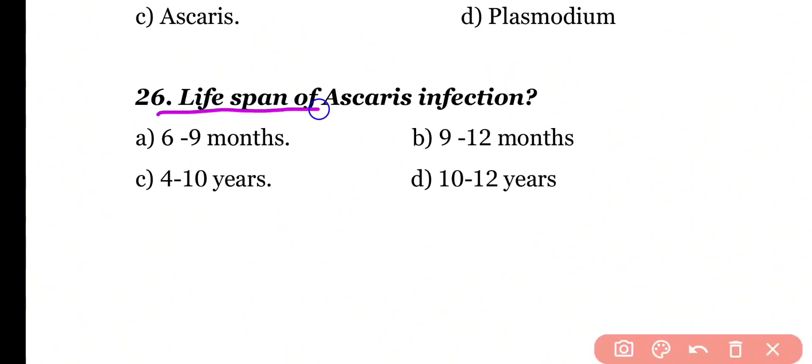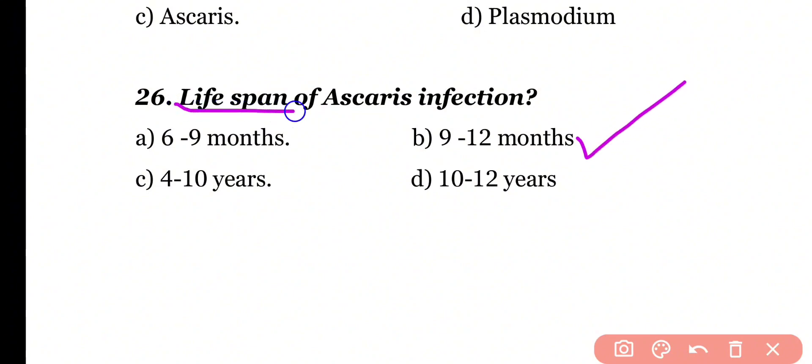Question 26: Lifespan of Ascaris infection is 6 to 9 months, 9 to 12 months, 4 to 10 years, or 10 to 12 years. Correct answer is option B. The lifespan of Ascaris infection is 9 to 12 months.